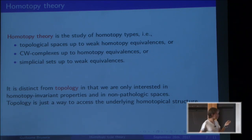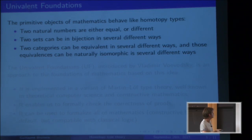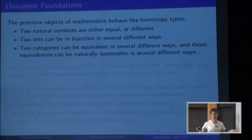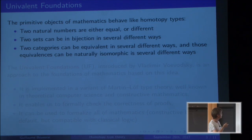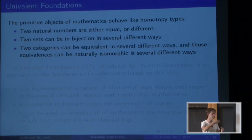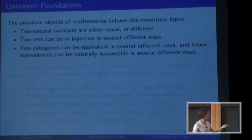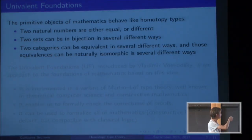Now, an observation about foundations of mathematics: the primitive objects of mathematics behave somehow like homotopy types. If you take two natural numbers, they're either equal or different — nothing special. But if you take two sets, the notion of equality is a bit strange: you should really talk about bijections, and two sets can be in bijection in many different ways.